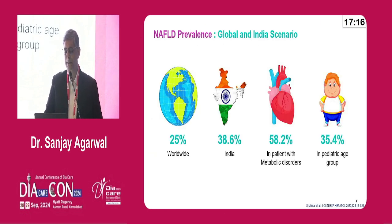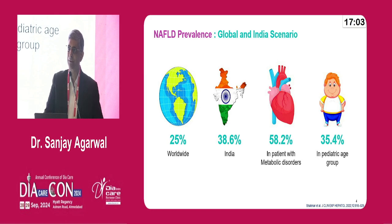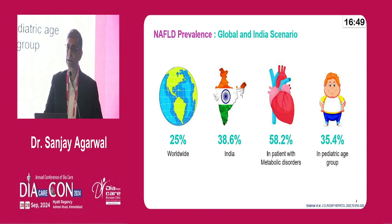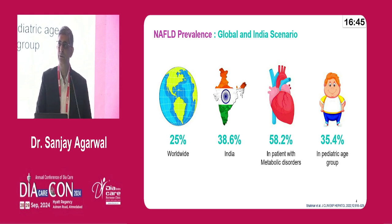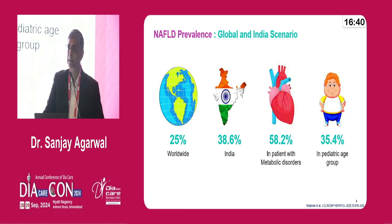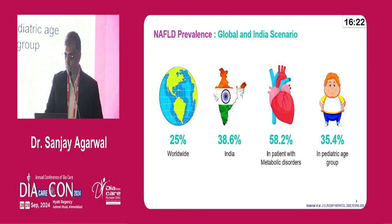To summarize the statistics: the worldwide prevalence is about 25%, while India is close to 38-40%. About 58% of patients with other metabolic disorders have a coexisting fatty liver disease. What is alarming is that almost 35% of our pediatric age group has presence of fatty liver disease, mirroring the incidence of childhood obesity. Unless these children aggressively address weight reduction and dietary habits, they are going to develop early onset of chronic liver disease.